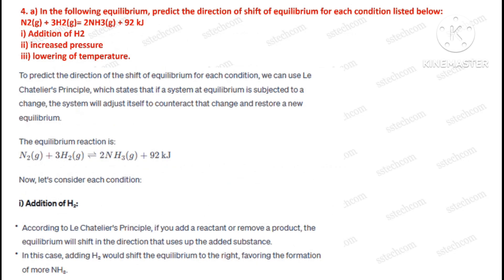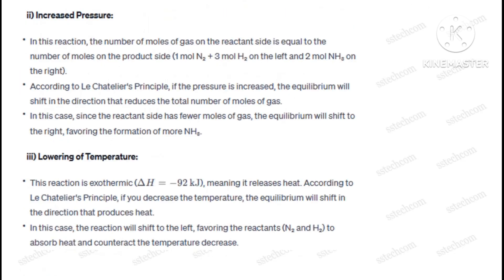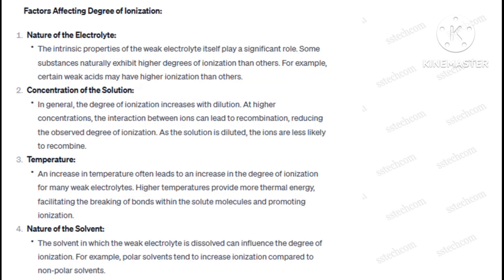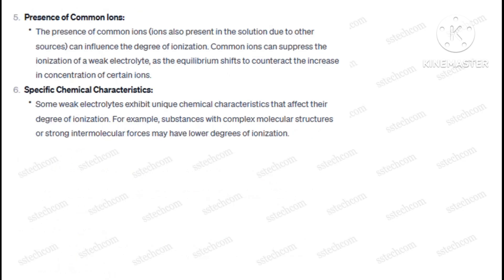Question number four, part A: In the following equilibrium, predict the direction of shift of equilibrium for each condition listed below. Part B: Define degree of ionization of a weak electrolyte and discuss the factors affecting it.